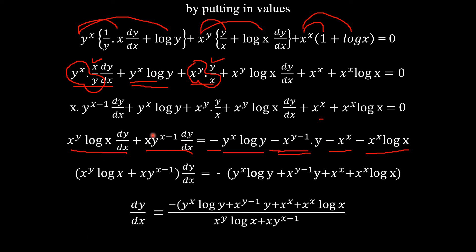Taking dy/dx common from the left side and −1 common from the right side, then dividing both sides by the bracket on the left, we get the final answer: dy/dx = −[y^x·log(y) + x·y^(x−1) + x^x + x^x·log(x)] / [x^y·log(x) + x·y^(x−1)].